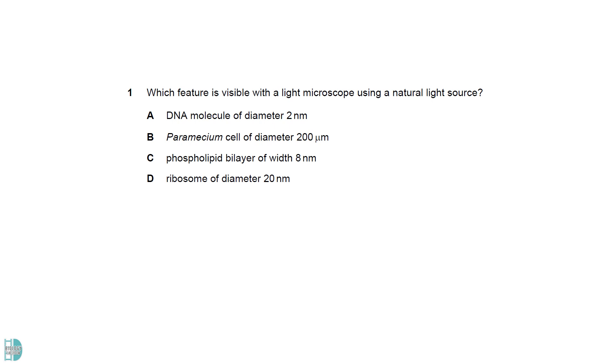The maximum resolution of a light microscope using a natural light source is 200nm. Anything smaller than this size cannot be seen. The resolution of a microscope is half of the wavelength used. B is the only option larger than the minimum size to be visible under the light microscope.